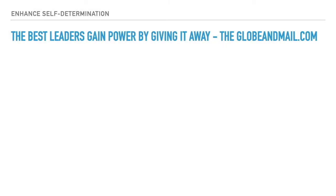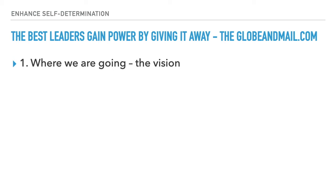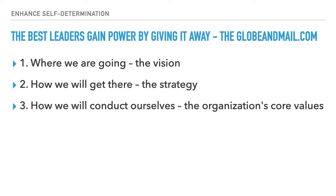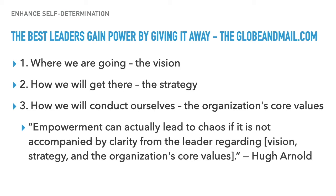The best leaders gain power by giving it away — from the globalandmail.com website. There are some great points in this article worth mentioning. Where are we going? People need to know the vision. How will we get there? The strategy. How will we conduct ourselves? The organization's core values. Writer Hugh Arnold said: empowerment can actually lead to chaos if it is not accompanied by clarity from the leader regarding vision, strategy, and the organization's core values.